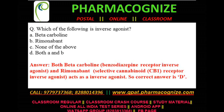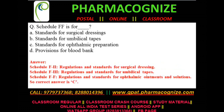Second question: which of the following is an inverse agonist? Option A is beta carboline, option B is rimonabant, option C is none of the above, and option D is both A and B. Both beta carboline and rimonabant are inverse agonists, so option D is the correct answer. Beta carboline is an inverse agonist at the benzodiazepine receptor, and rimonabant is an inverse agonist at the cannabinoid receptor.